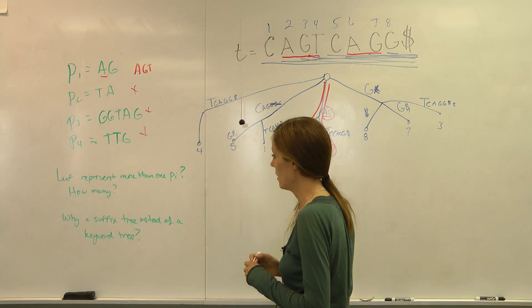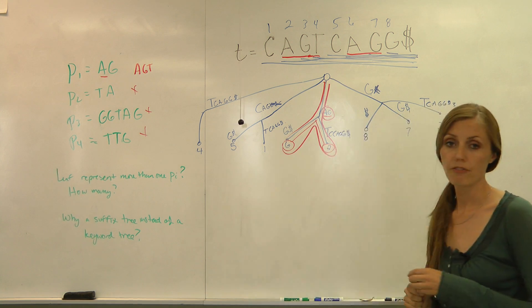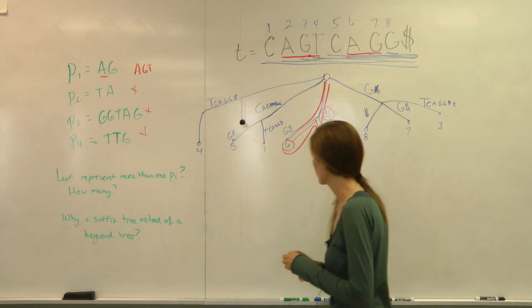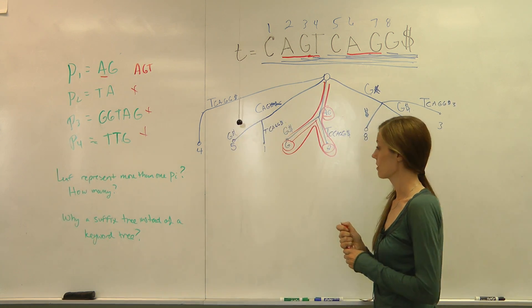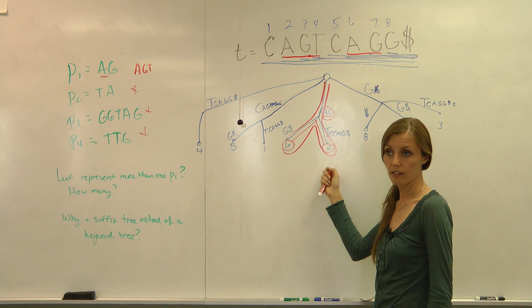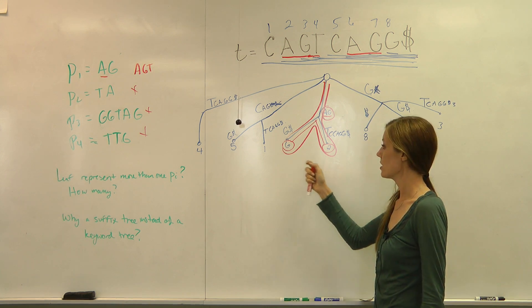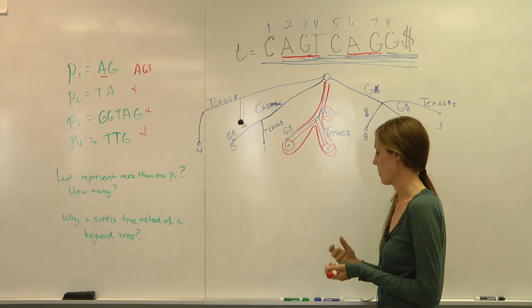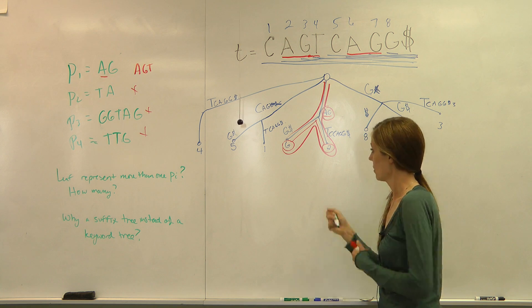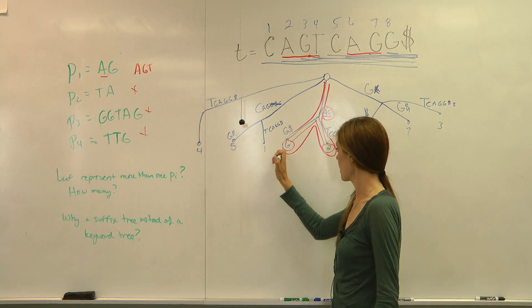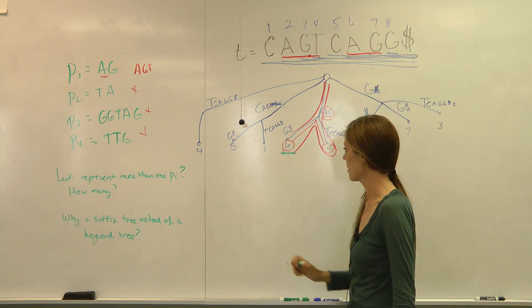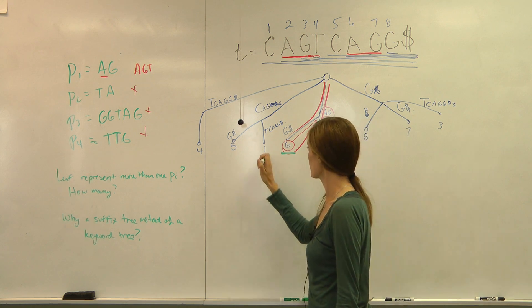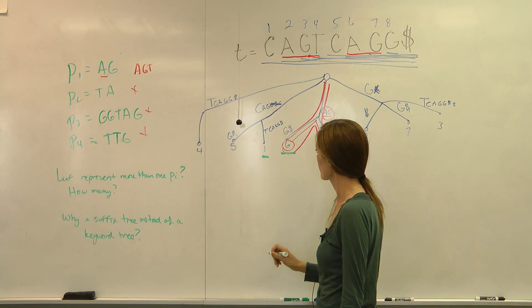And then I asked the question, can a leaf represent more than one pattern? The answer is yes. And we see that here. Well, you see that two leaves can represent one pattern. That asks, can a leaf represent more than one pattern? What patterns, say, can this leaf represent? Or let's even pick a different one. What patterns can this leaf represent?